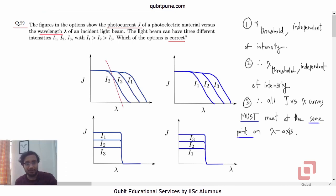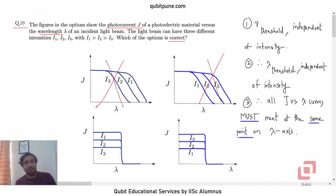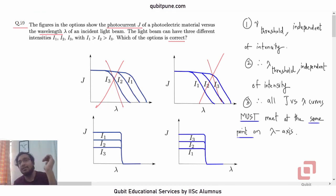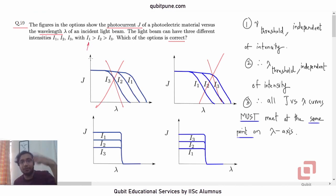Definitely not the first two options — so it is either option C or D. Now note that once the threshold frequency is exceeded, the photocurrent varies with intensity: the more the intensity, the more the photocurrent. Here they are saying I1 is the greatest, so the photocurrent corresponding to I1 should also be the greatest for the least value of lambda.